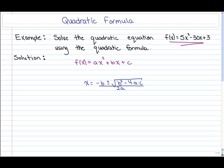Now our function is right here, so our value of a is equal to 5, our value of b is equal to negative 30, and our value of c is equal to 3.